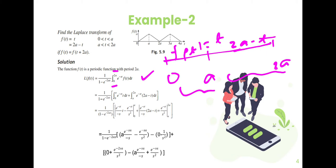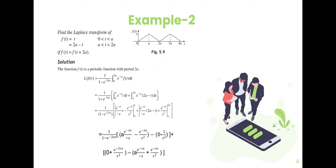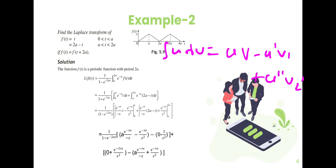To evaluate these integrals, we use Bernoulli's formula: the integral of u dv equals uv minus u' v₁ plus u'' v₂, and so on. Here u equals t, differentiation gives 1, and dv equals e to the power minus st, so v₁ equals e to the power minus st divided by minus s.